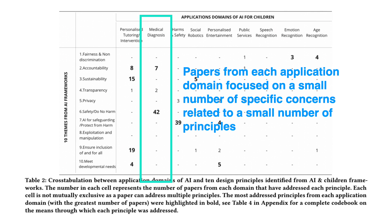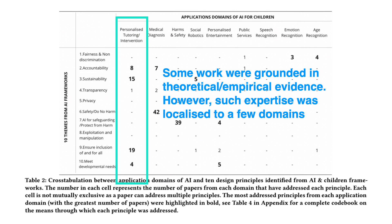In fact, the only two principles seen as important for this domain are accountability and safety/do-not-harm. Meanwhile, when identifying the how — in terms of how AI systems managed to follow a specific design principle — we found that some work was grounded in theoretical and empirical work, such as the use of self-determination theory in some tutoring systems. However, such expertise was localized to a few domains such as personalized tutoring, while the remaining application domains had much less supporting theory available.